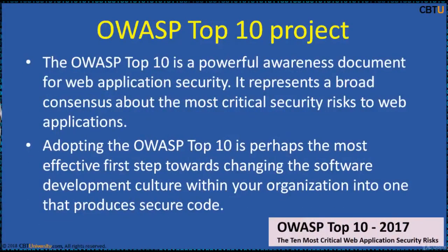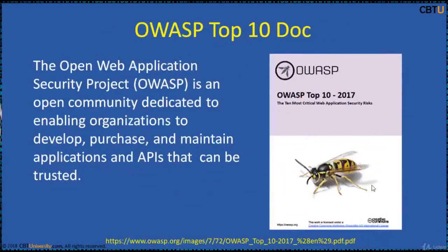The OWASP Top 10 is a powerful awareness document for web application security. It represents a broad consensus about the most critical security risks to web applications. Adopting the OWASP Top 10 is perhaps the most effective first step towards changing the software development culture within your organization into one that produces secure code. OWASP is an open community dedicated to enabling organizations to develop, purchase, and maintain applications and APIs that can be trusted.